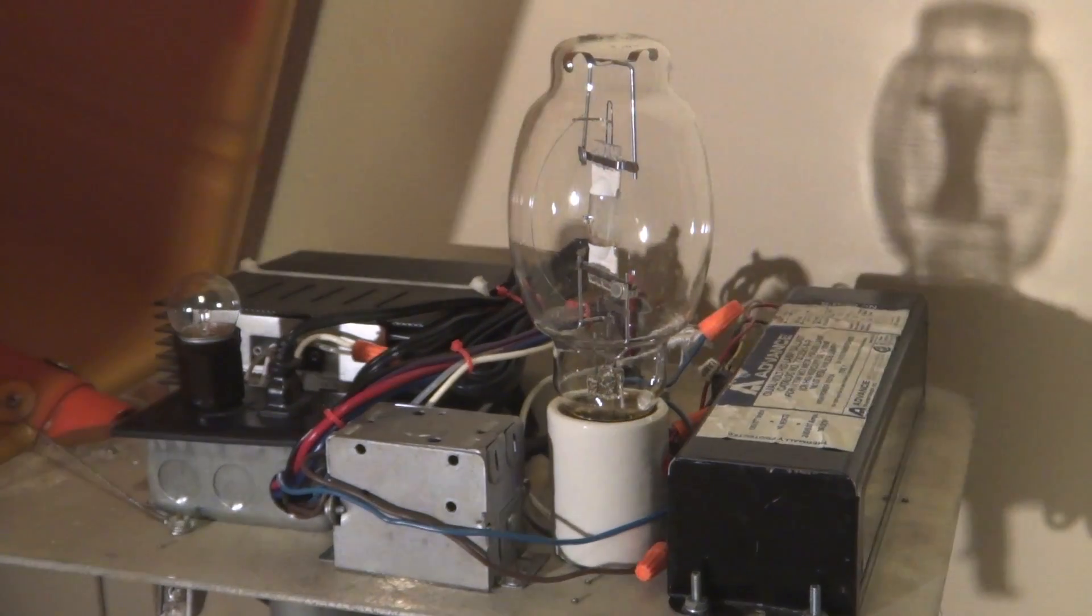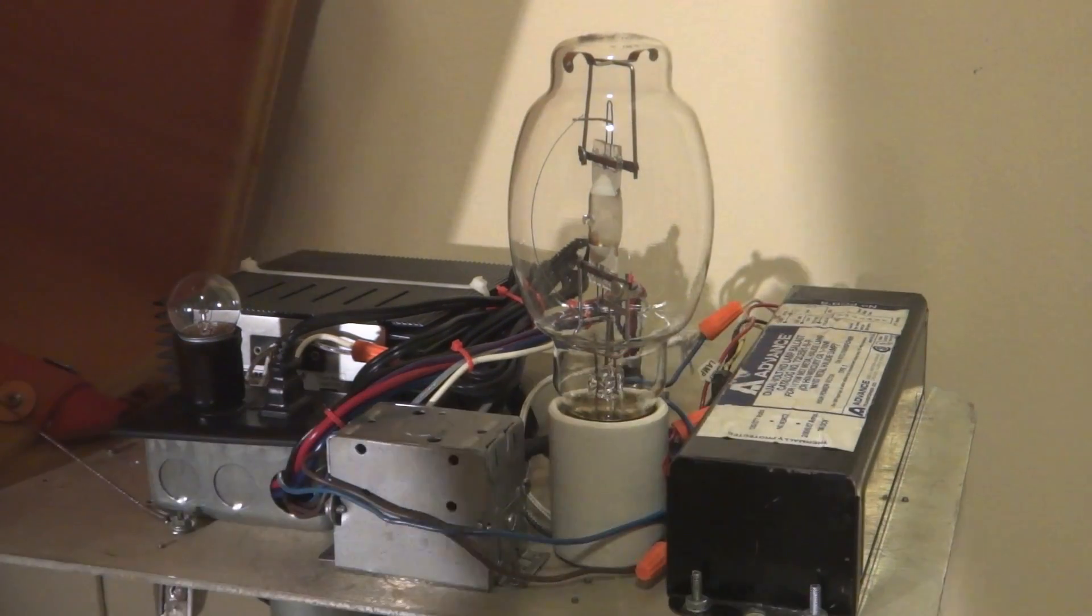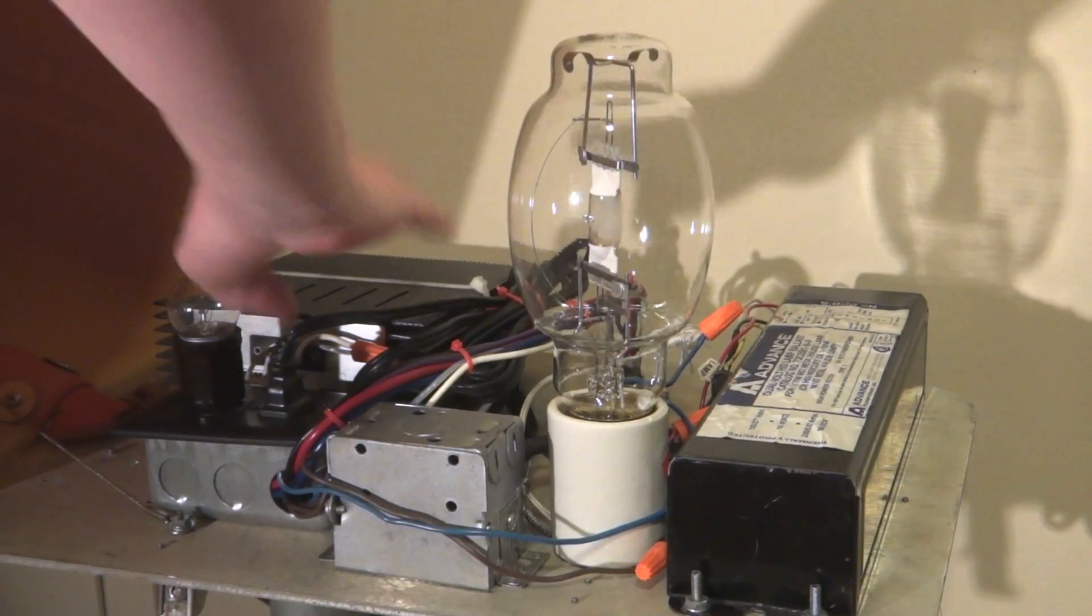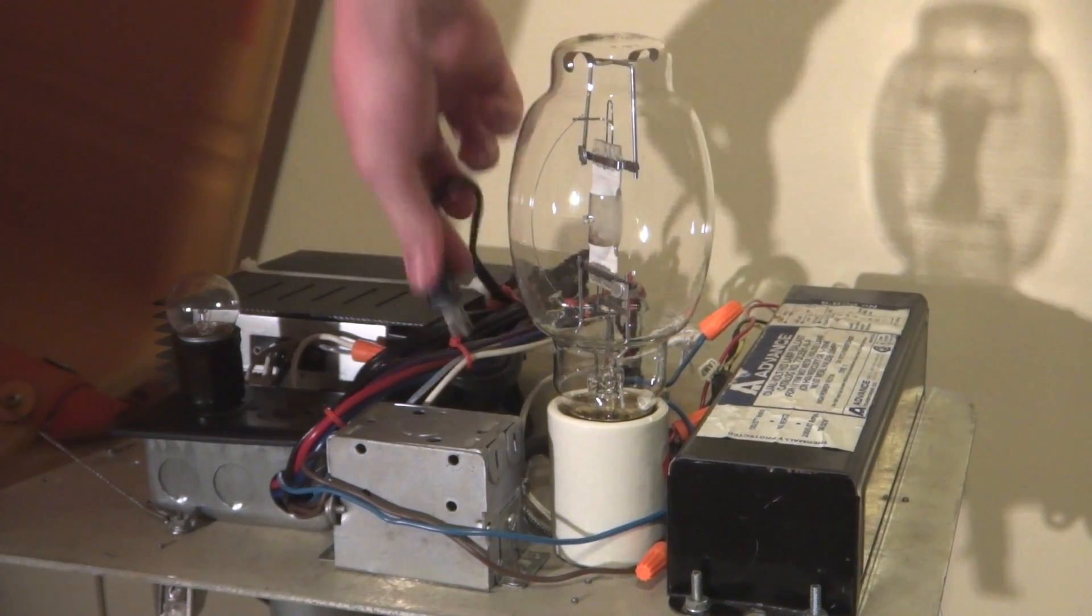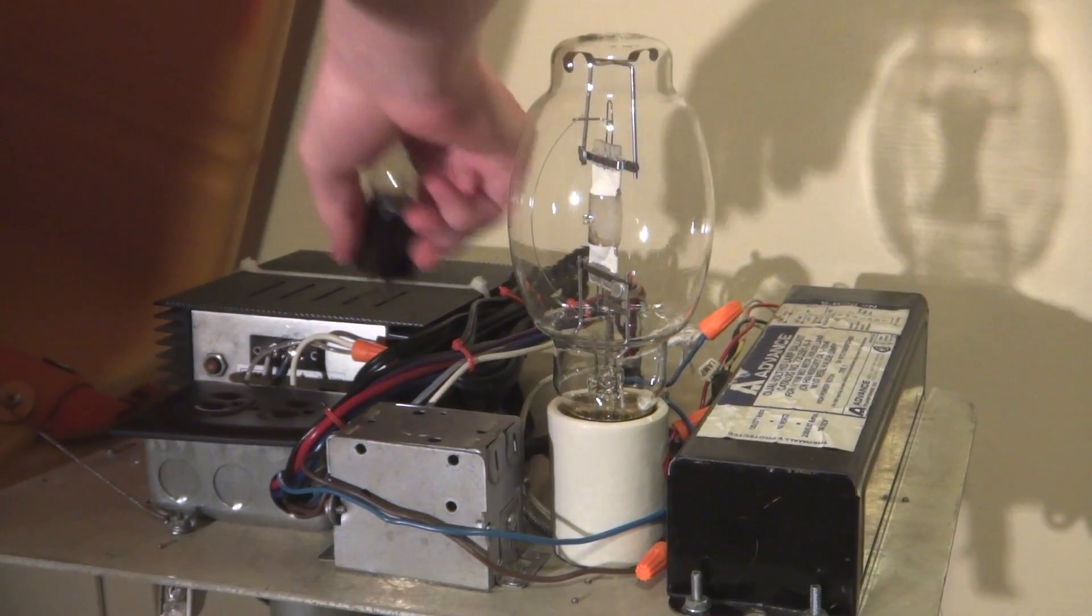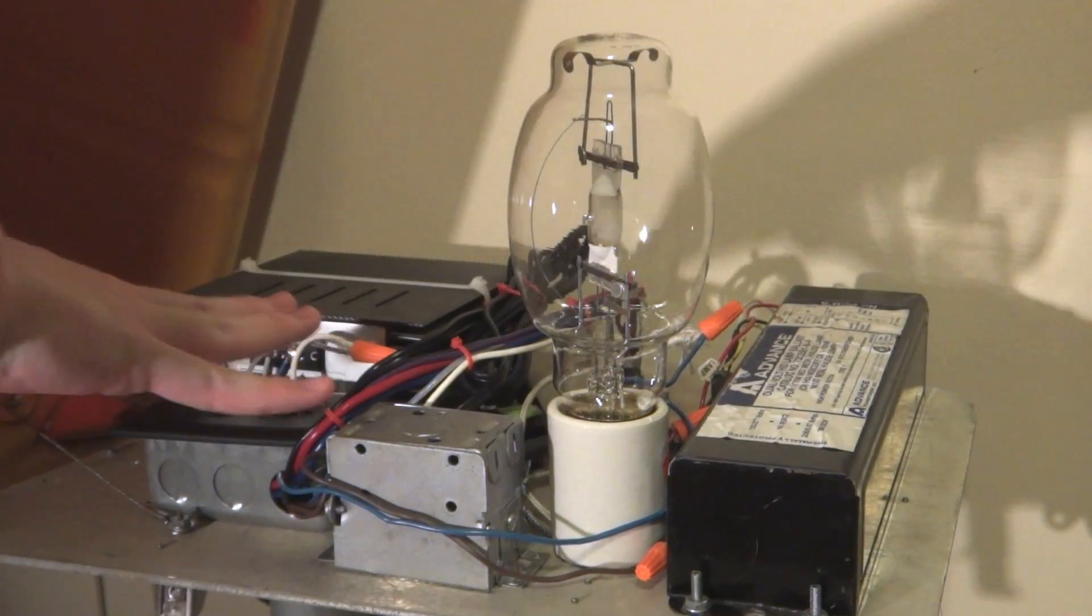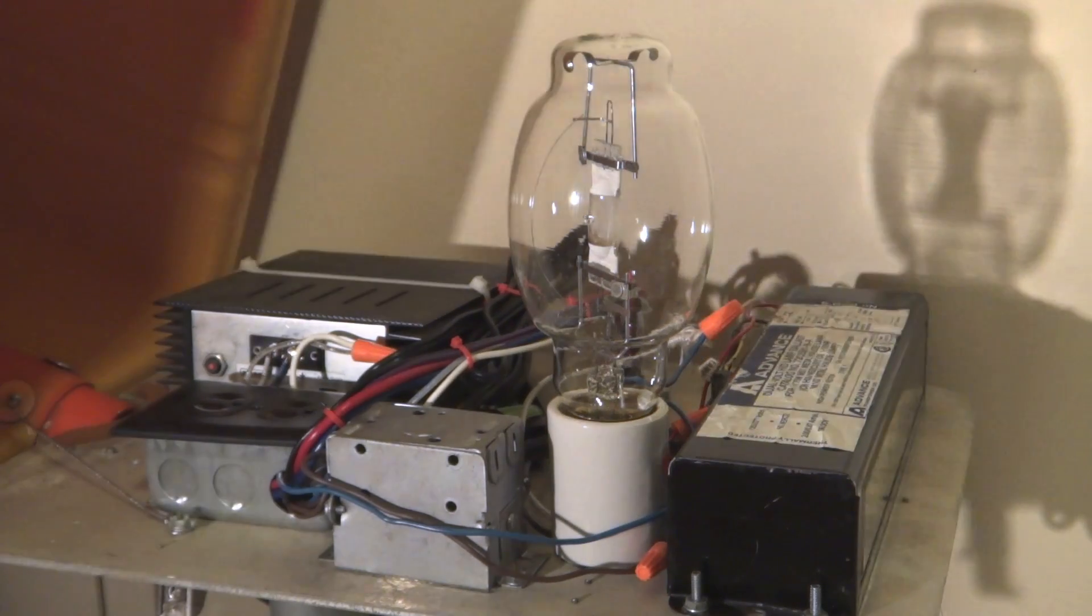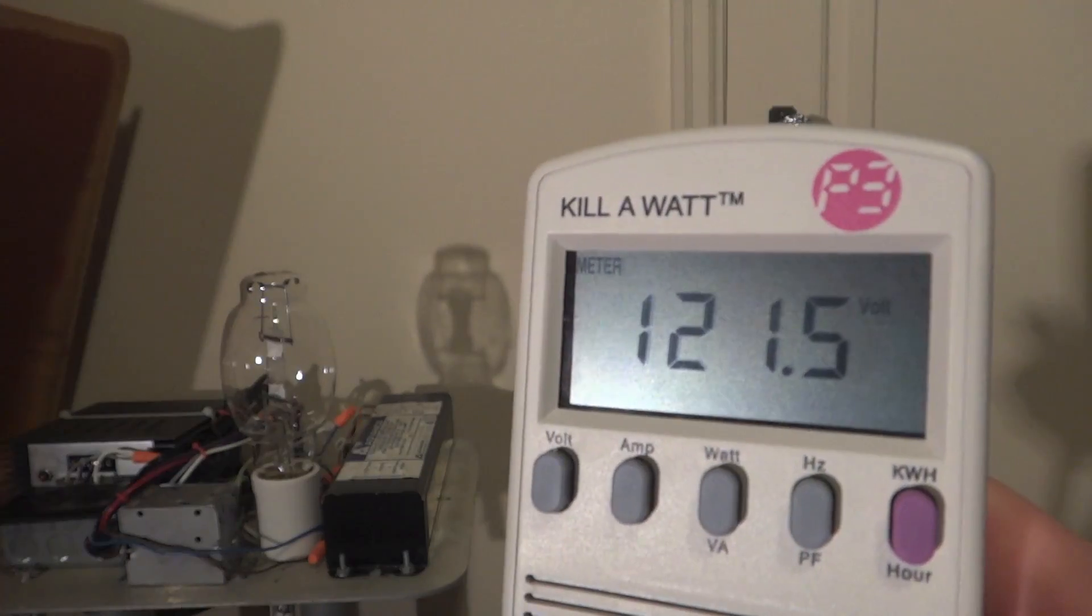We will turn on the ballast. And these things are all turned off down here. And to make it even better, we will unplug them. Because all these things are on one cord. Now it is just the metal halide ballast on the cord.